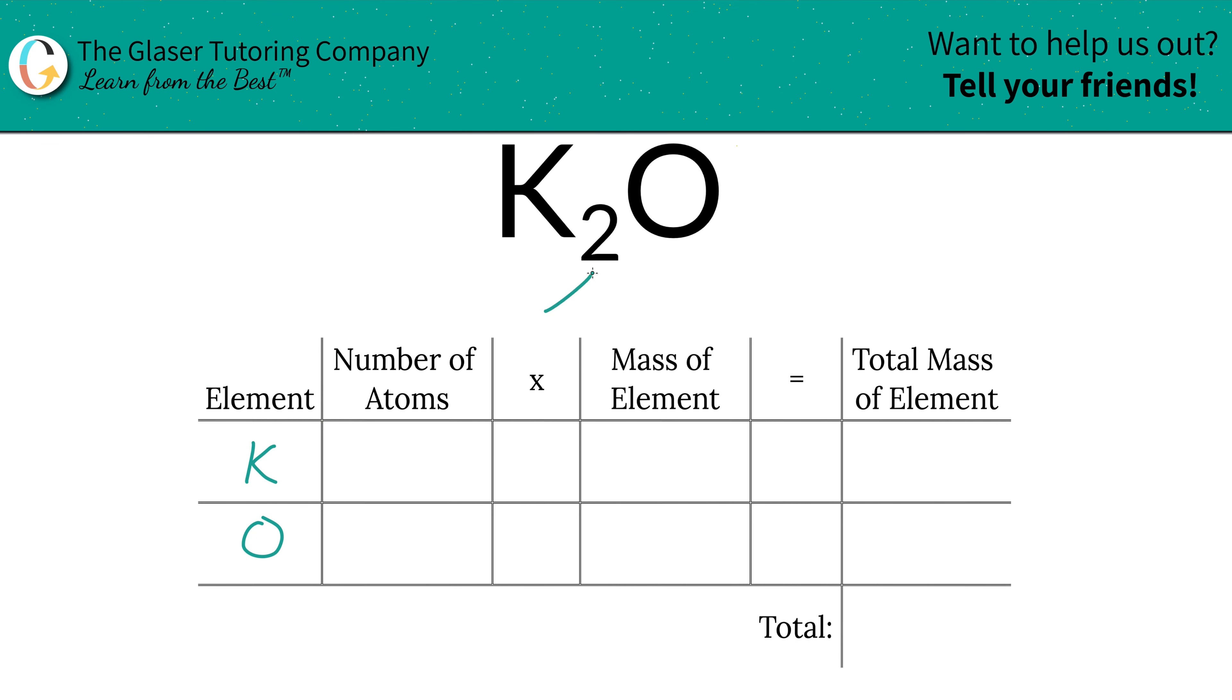Next, then to identify the number of atoms, that's where the subscripts come into play. If you don't see a subscript for a particular element, just put in a one. So there's two potassium, one oxygen.